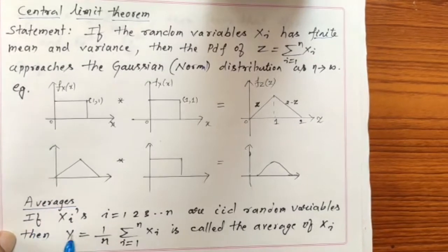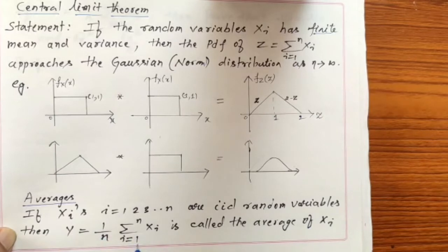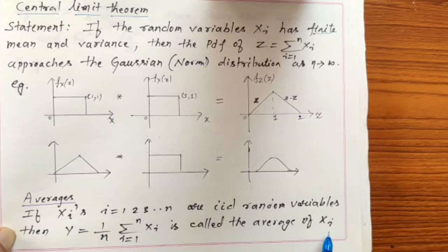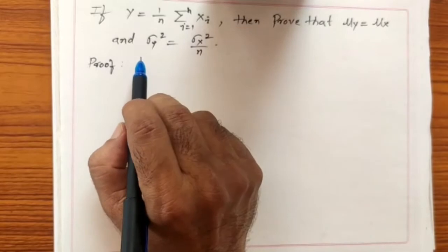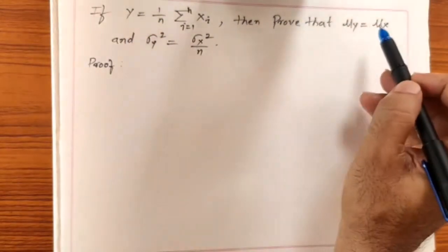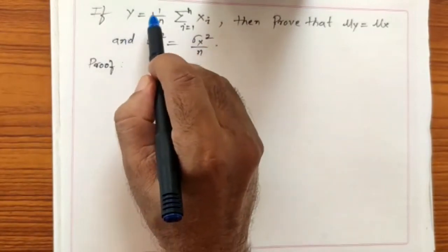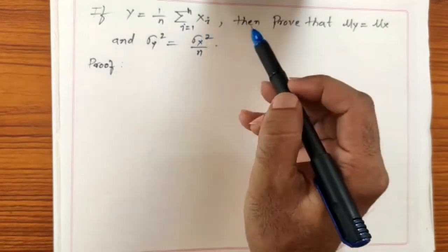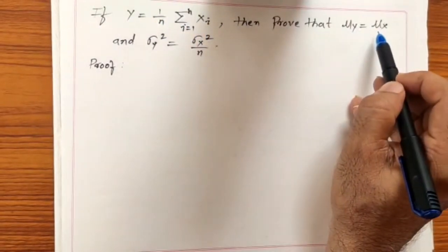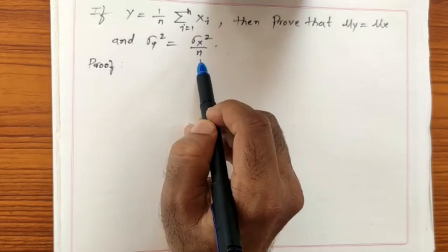If Xi, for i = 1, 2, 3, ..., n, are IID random variables, then Y = (1/n) × Σ(i=1 to n) Xi is called the average of the random variables Xi. We will show that the mean of Y is finite and the variance is also finite. Specifically, if Y = (1/n) Σ Xi, then μY = μX, a finite value, and σY² = σX²/n, which is also a finite value.